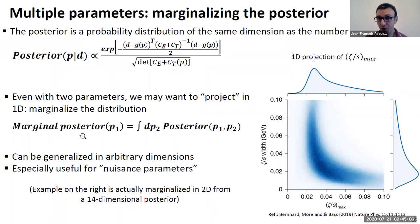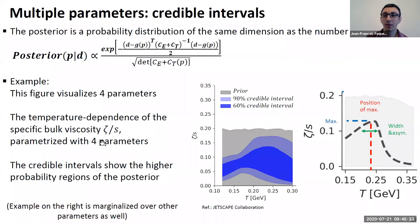This can be generalized to an arbitrary number of parameters. Actually, this is already highly integrated out. The original posterior in this example was, I believe, 14-dimensional. This already integrates out 12 parameters before you can visualize the correlation between these two. They're all integrated over. And you get this distribution. And if you integrate one more time, you get these distributions.